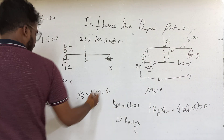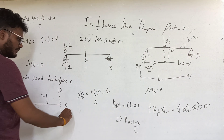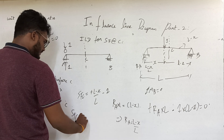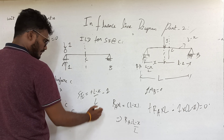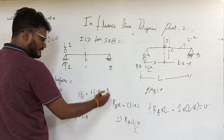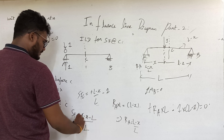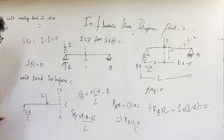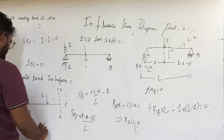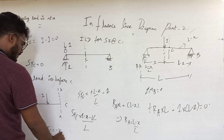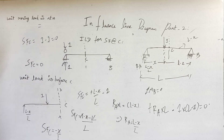Simplifying: shear force at C equals (L minus x minus L) by L, which gives minus x by L, or minus A by L. So shear force at C is minus A by L when the unit moving load is before C.